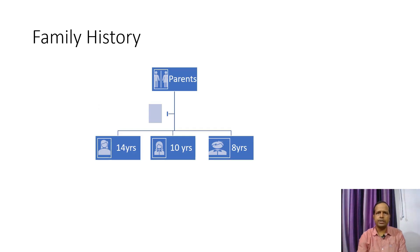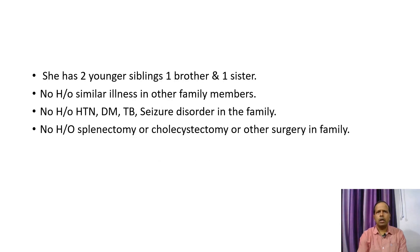Family history: She has two younger siblings — a younger sister of 10 years and a younger brother of 8 years. No history of similar illness in other family members. No history of hypertension, diabetes mellitus, tuberculosis, or seizure disorder in the family. No history of splenectomy, cholecystectomy, or other surgeries in the family.